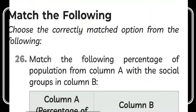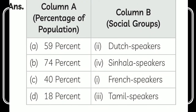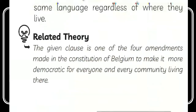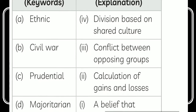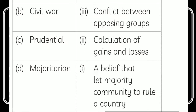Moving on to Match the Following: 59% corresponds to Dutch speakers; 74% corresponds to Sinhala speakers; 40% corresponds to French speakers; 18% corresponds to Tamil speakers. Also: ethnic division is based on shared culture; civil war means conflict between opposing groups within a country; prudential means calculation of gains and losses; majoritarianism means the belief that majority communities will rule a country.